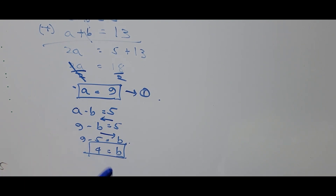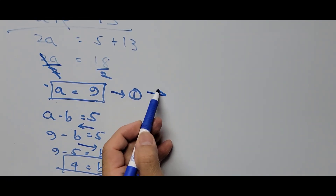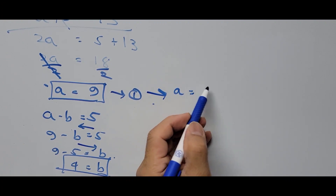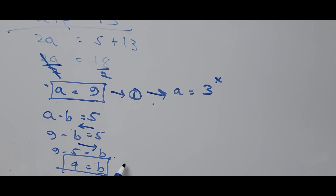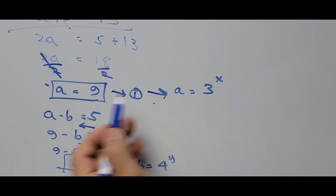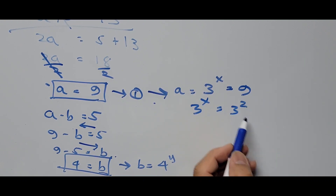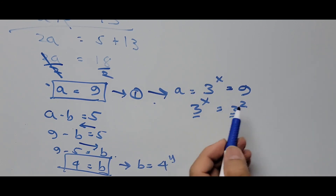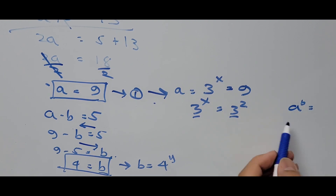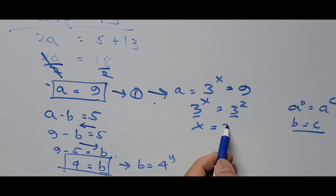Since a and b are substituted variables — a in place of 3 to the power of X, and b in place of 4 to the power of Y — we now back-substitute. For a: 3 raised to X equals 9, and 9 can be written as 3 squared. Since the bases are the same, we equate the exponents using the rule: if a^b = a^c then b = c. Therefore X equals 2.